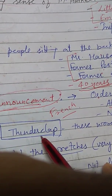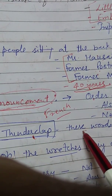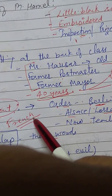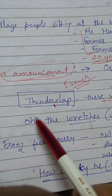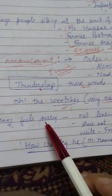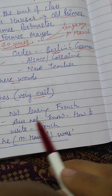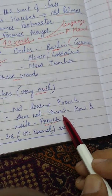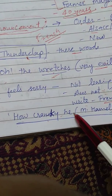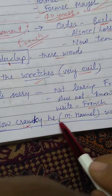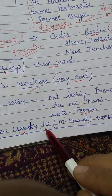As the boy heard these words, he felt a thunderclap. He never thought such an order would come, and he had never learned his mother language — French. He felt sorry. His reaction was one of anguish toward the German people. He felt sorry for not learning French and not knowing how to write or read it. He remembered how strict — or cranky — M. Hamel had been throughout the past, and now he began to create a soft corner in his heart for M. Hamel.